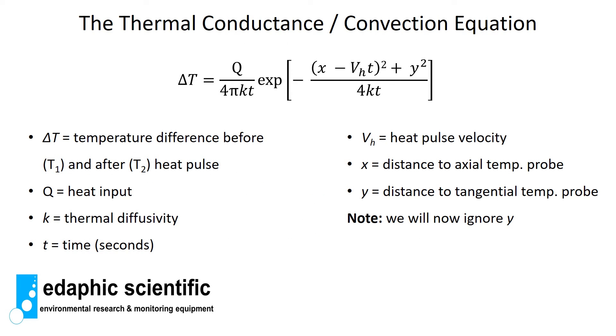We'll just go through the various parameters of the thermal conductance and convection equation. First of all we have delta T, and what this means is the temperature difference before and after the heat pulse. So T2 is the temperature after a heat pulse and T1 is the temperature before the heat pulse, and delta T is simply the difference between the two. Q in this equation is the amount of heat that we input through the heat sensor or the heat probe. K is your thermal diffusivity, also known as thermal conductivity, and this simply describes how heat would naturally move through a material. T is simply time in seconds.